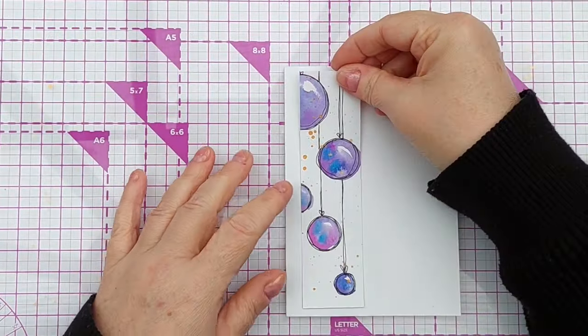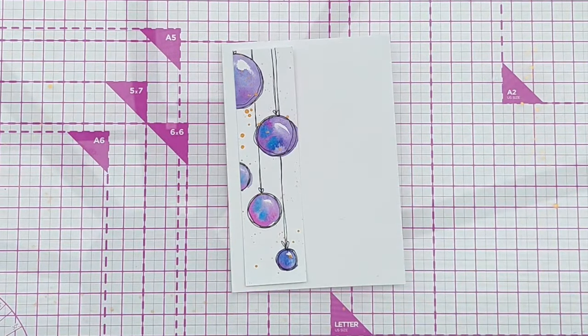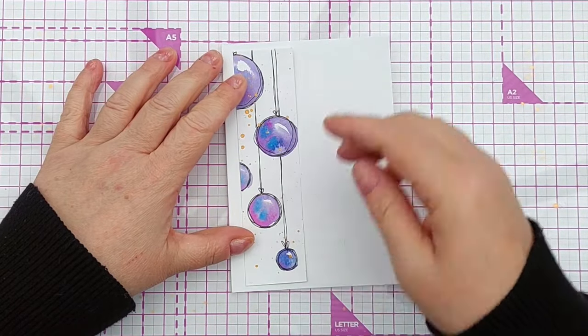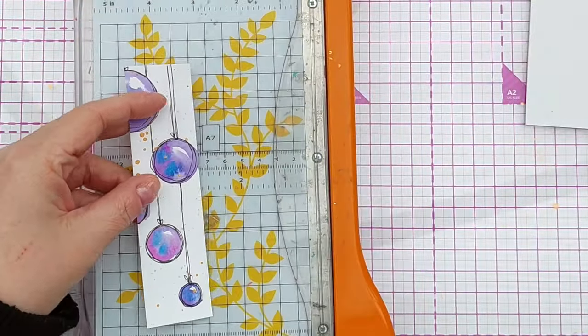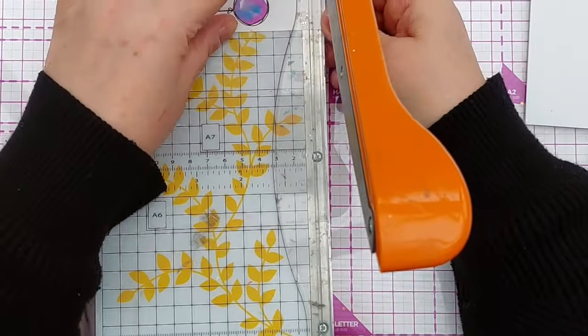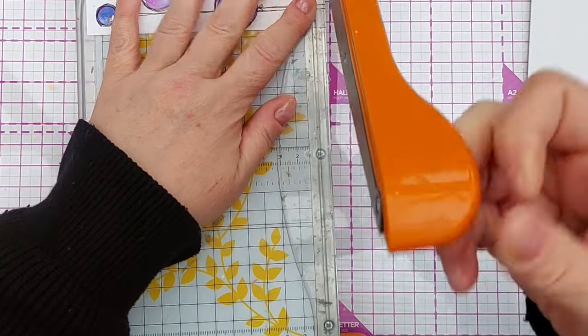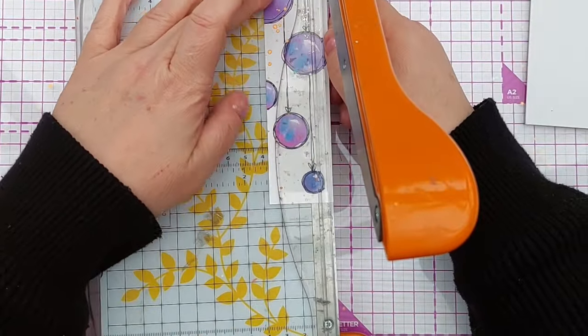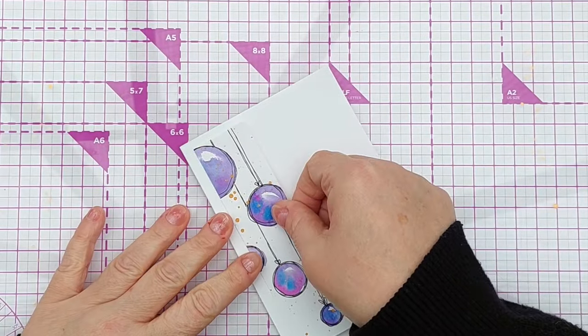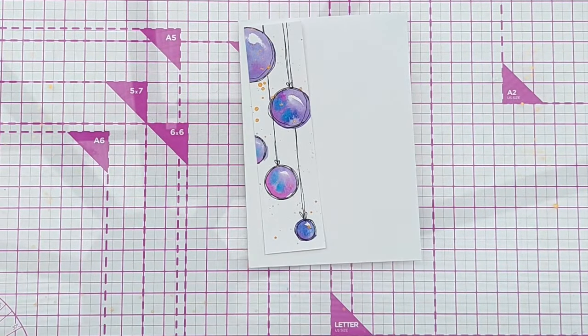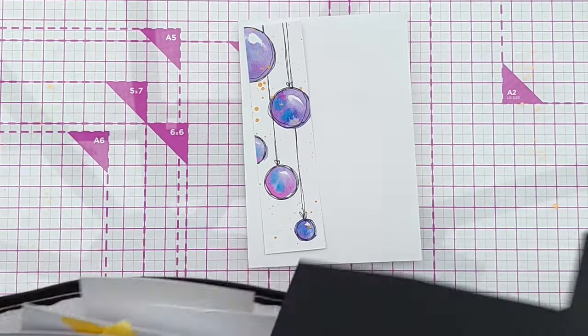So if we bring our card blank back in, I'm going to put that there. I'm just wondering if it needs maybe a black outline. So I'm going to trim it down ever so slightly, a little bit from the bottom, and a little bit from the top, and a tiny little bit off the side. And then I'm going to give it a slim black border from black card, my little bag of scraps there.